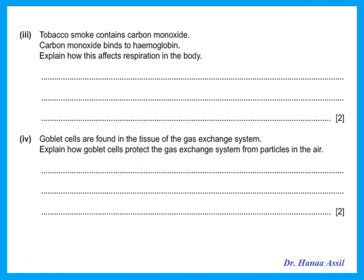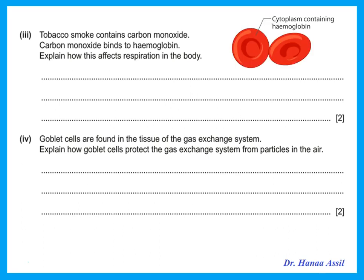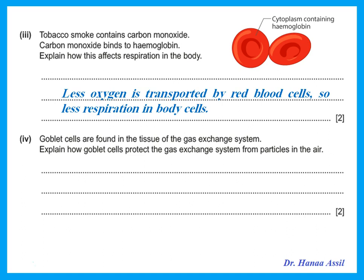Tobacco smoke contains carbon monoxide. Carbon monoxide binds to hemoglobin. Explain how this affects respiration in the body. You should realize that hemoglobin is in the cytoplasm of the red blood cells. Usually it attaches to oxygen to transport it to the body's cells. So if you have carbon monoxide in the blood, the carbon monoxide will attach to the hemoglobin, so less oxygen is transported by the red blood cells and less respiration occurs in the body's cells.